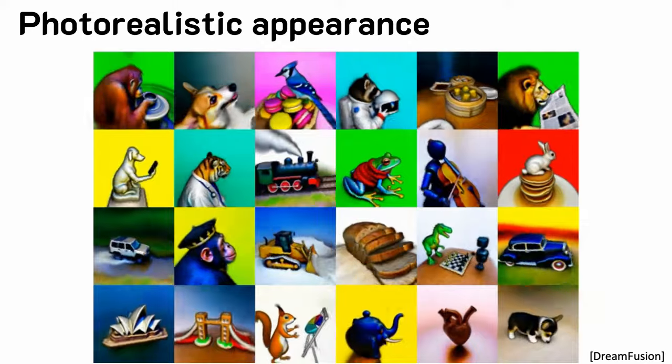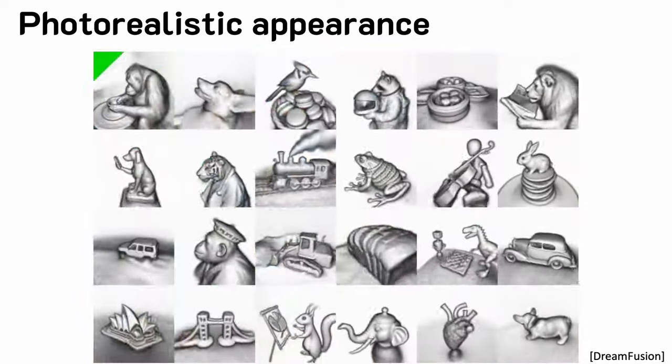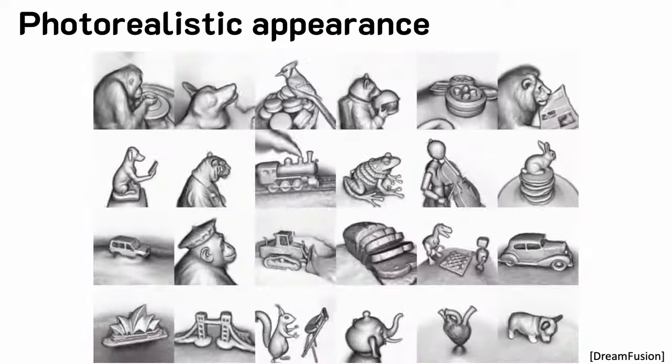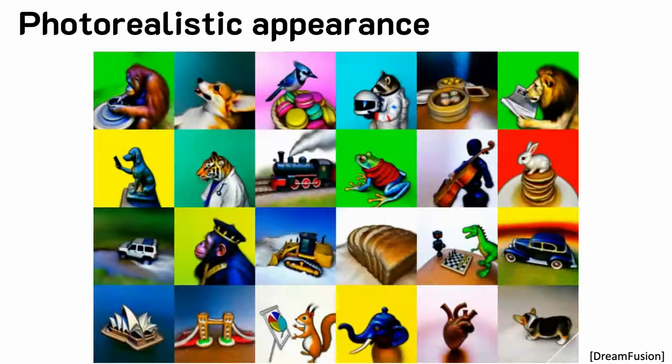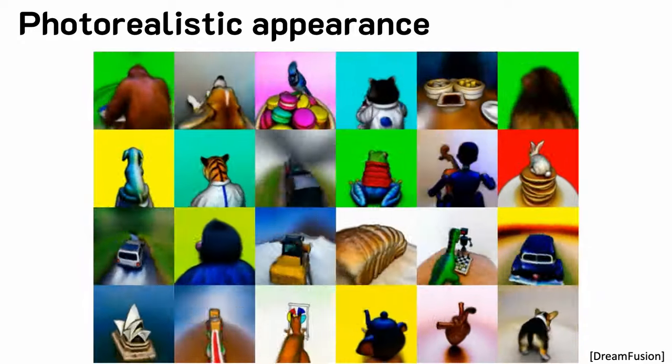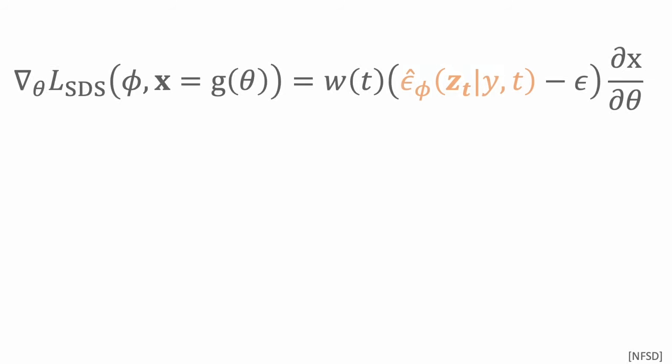All these improvements are exciting. But if you look at DreamFusion's results, these 3D models often have blurry appearance and saturated colors. How do we improve this? We need to take a closer look at what the score distillation sampling is doing.